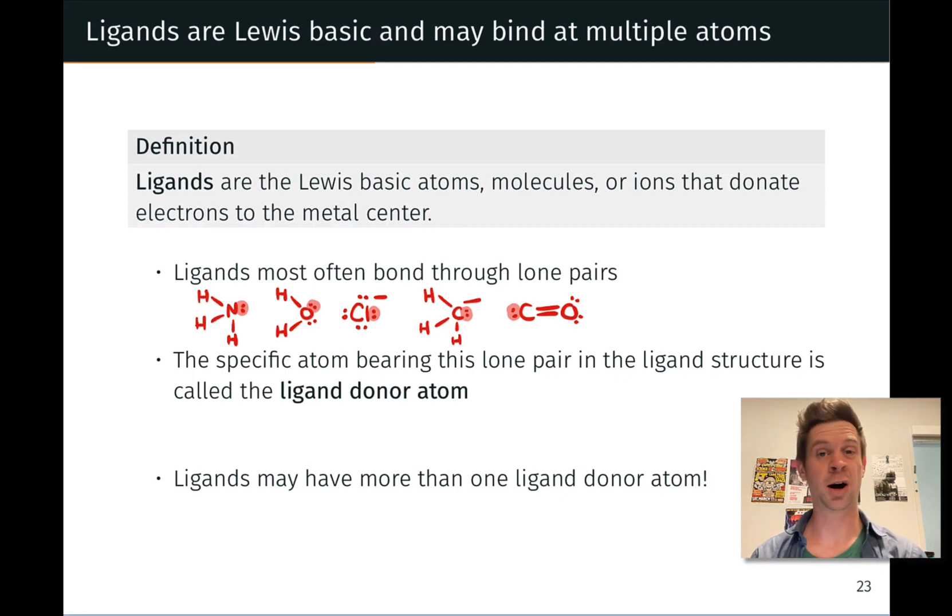And five examples of some common ligands are shown here with those binding lone pairs highlighted. So here's ammonia, water, chloride, the methyl anion, which is a very strong Lewis base we can think of as a ligand if that carbon is linked to a metal.